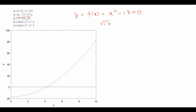This is the program which I used to plot this graph. As you know, the Newton-Raphson method uses successive approximation which is given by: x(n+1) = x(n) - f(x(n)) / f'(x(n)).